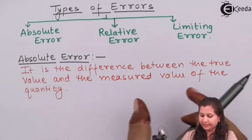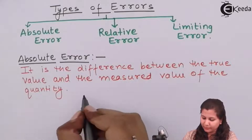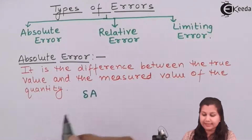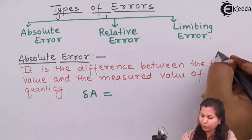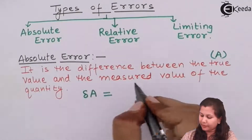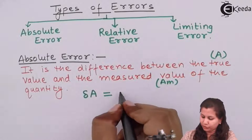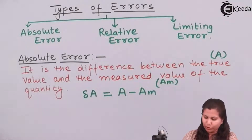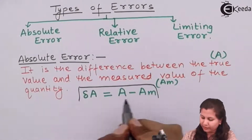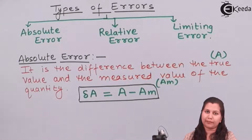Absolute error is the difference between the true value and the measured value. If we write the formula for it, absolute error — denoted as ΔA — will be equal to the true value minus the measured value. Suppose the true value is denoted as A and the measured value as AM, so absolute error ΔA = A − AM. Whenever we want to find the absolute error in a measurement, we find the difference between the true value and the measured value.